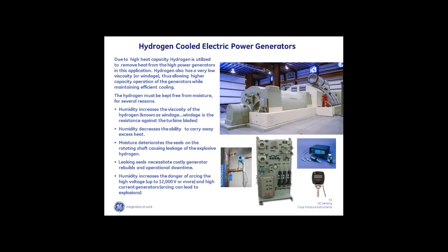Another application we run across is in power plants: hydrogen-cooled electric generators. Hydrogen is used to take heat away from the generator. It is the most thermally conductive gas and the lightest gas, so it produces less resistance against spinning the turbine. We have to dry that hydrogen out completely — they're looking for parts per million levels or below. It's a very popular application for us because we also measure hydrogen in these applications.